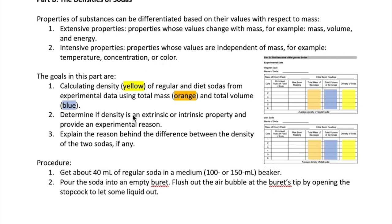To determine whether density is intensive or extensive, you have to calculate the value of density of a substance as you change its mass. In this section, you will use both regular and diet sodas as the substances. You will calculate the density of these substances as you increase its total volume by 5 milliliters at a time. Because the total volume increases, the total mass will also increase, which will help us determine whether density is intensive or extensive.